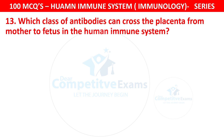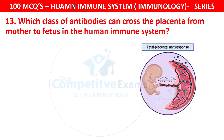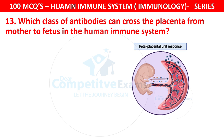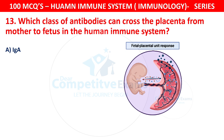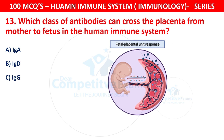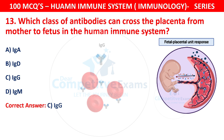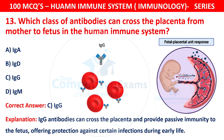Question 13. Which class of antibodies can cross the placenta from mother to fetus in the human immune system? Your options are IgA, IgD, IgG, or IgM. The correct answer is C — IgG. IgG antibodies can cross the placenta and provide passive immunity to the fetus, offering protection against certain infections during early life.